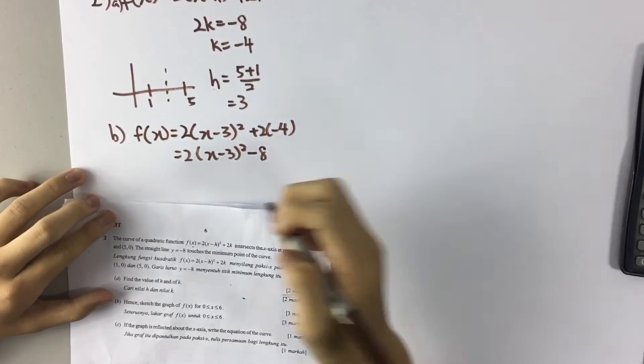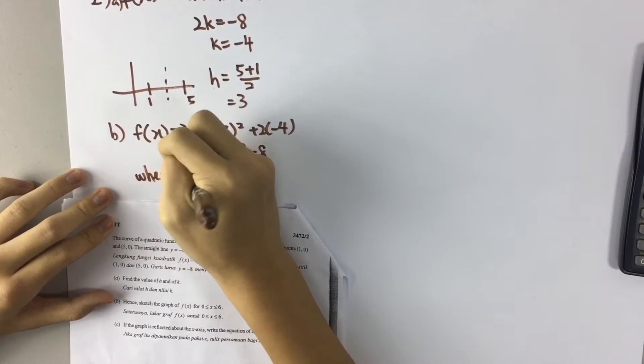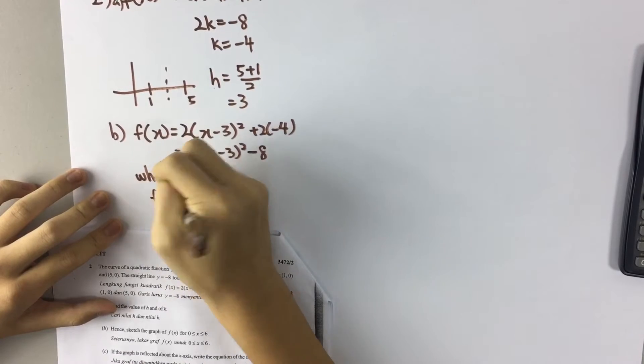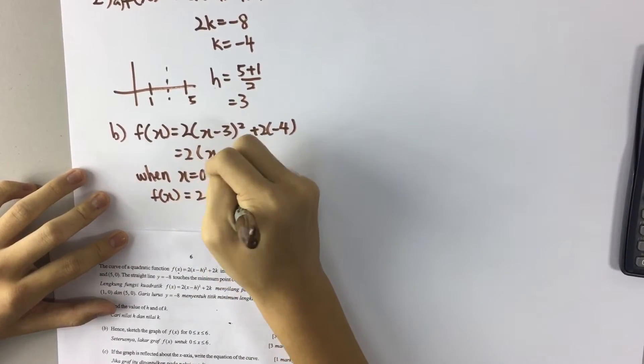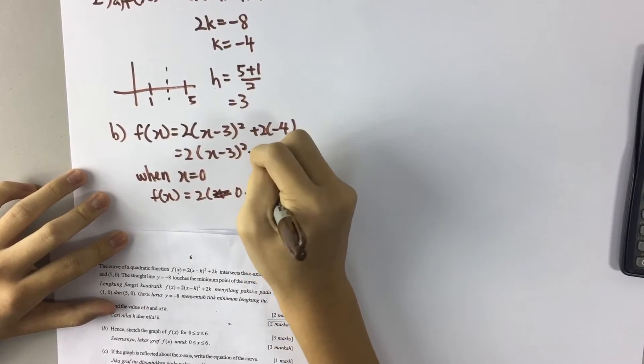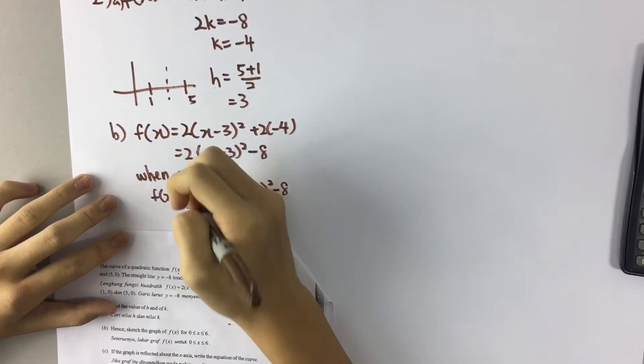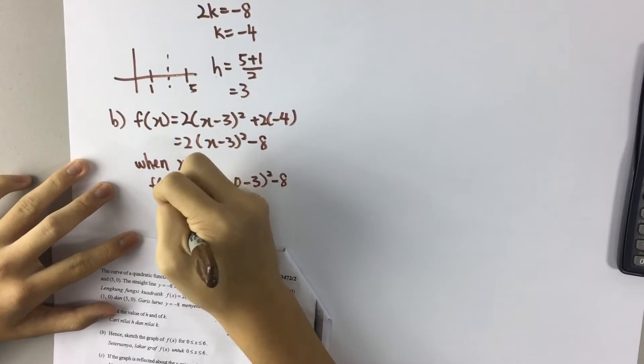When x is equal to 0, fx is equal to 2(0 minus 3)² minus 8, which means negative 3 squared is 9. 2 times 9 minus 8, so it's 10.